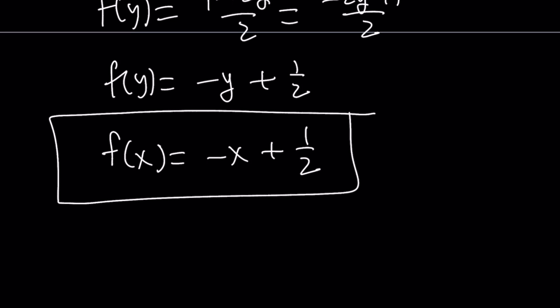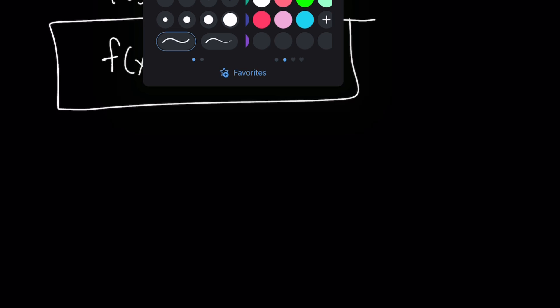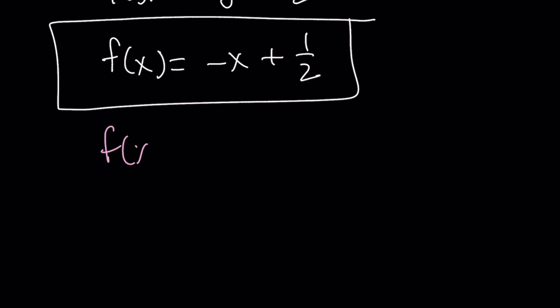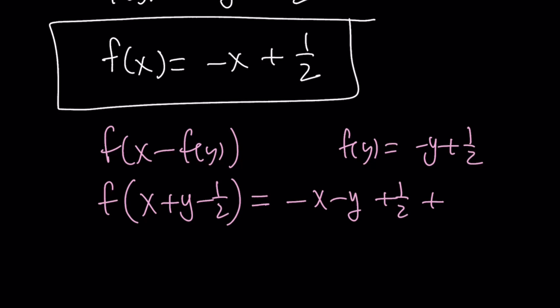We can definitely check our work. So if you go ahead and substitute this into the original problem, which was f(x - f(y)). Let's see what happens. f(y) is -y + 1/2. Remember that. So this is going to become f(x + y - 1/2) because we're subtracting it. And then by definition of f again, f takes this expression, negates it, and then adds 1/2 to it. And this becomes -x - y + 1, which is the same as 1 - x - y. And if you remember, this was the expression on the right-hand side in the original problem.